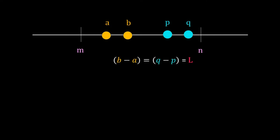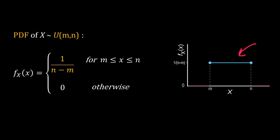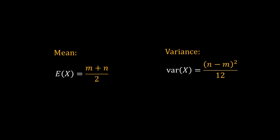There are several well-characterized continuous distributions; we will discuss three of those. Start with the uniform distribution. X lies between m and n. For any two intervals of the same length — say a to b and p to q — the probabilities of X being in those intervals are the same. The probability depends on the length of the interval, not its position. Consequently, the PDF of the uniform distribution is flat, equal to 1/(n−m). The CDF is (x−m)/(n−m). The mean is (n+m)/2 and the variance is (n−m)² / 12.